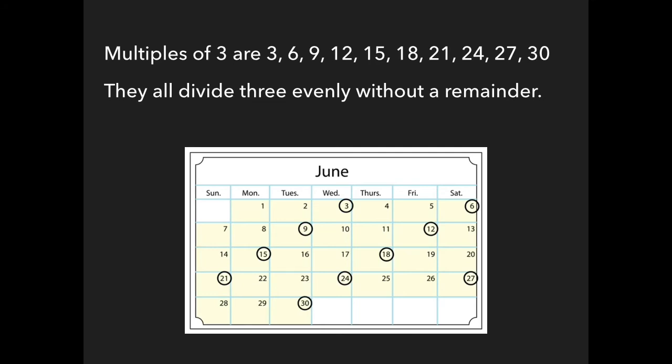Multiples of 3 are 3, 6, 9, 12, 15, 18, 21, 24, and 30. They all divide 3 evenly without a remainder.